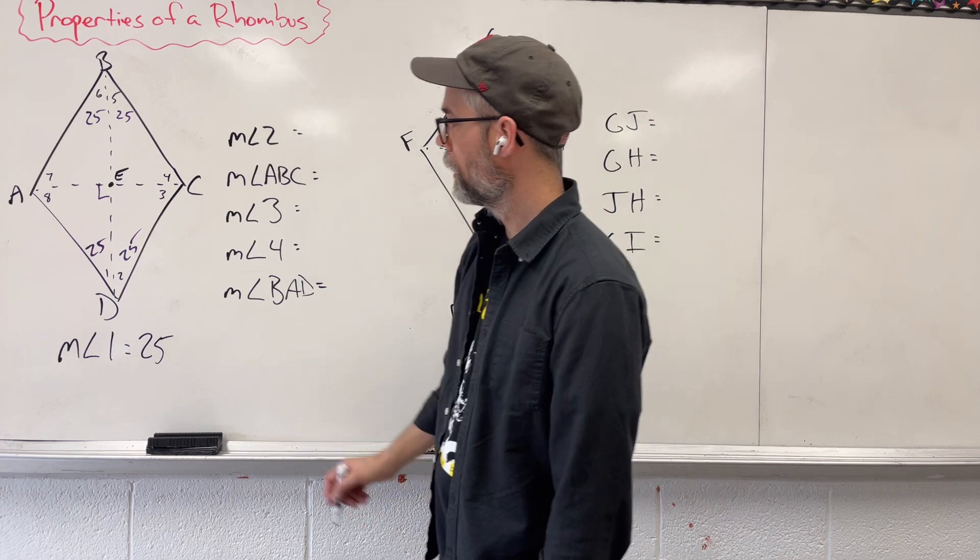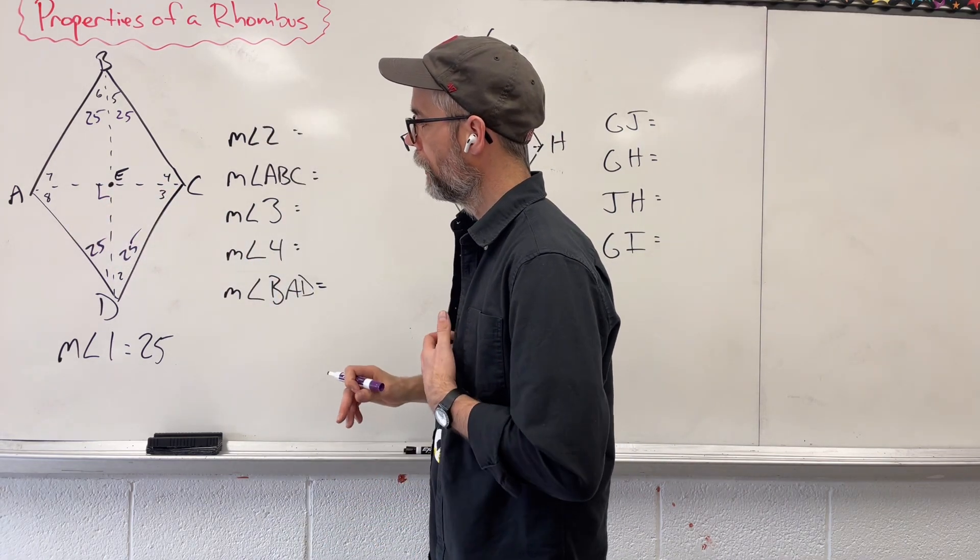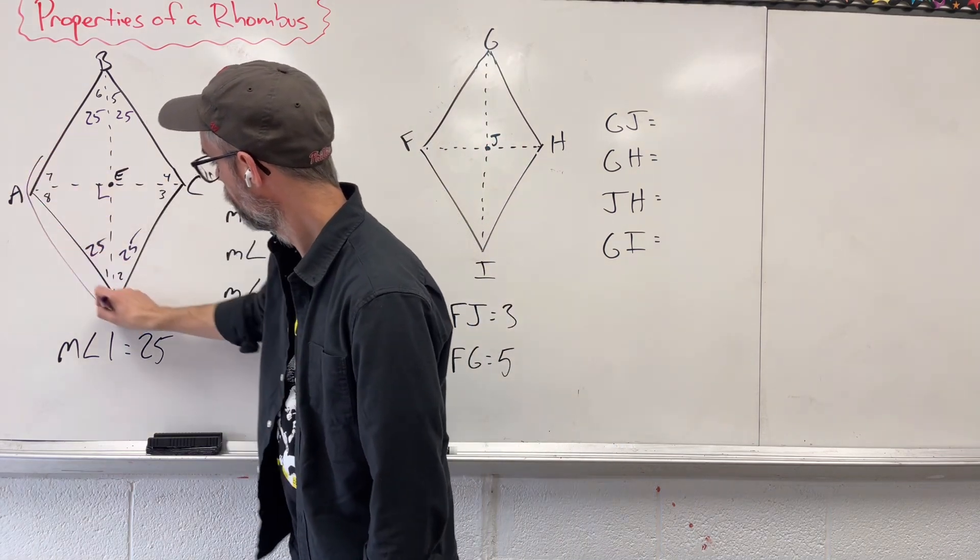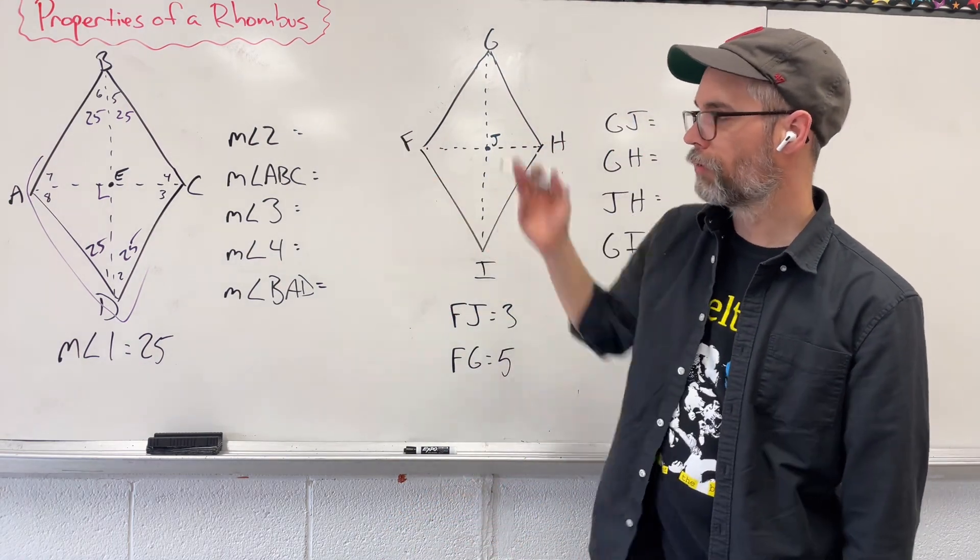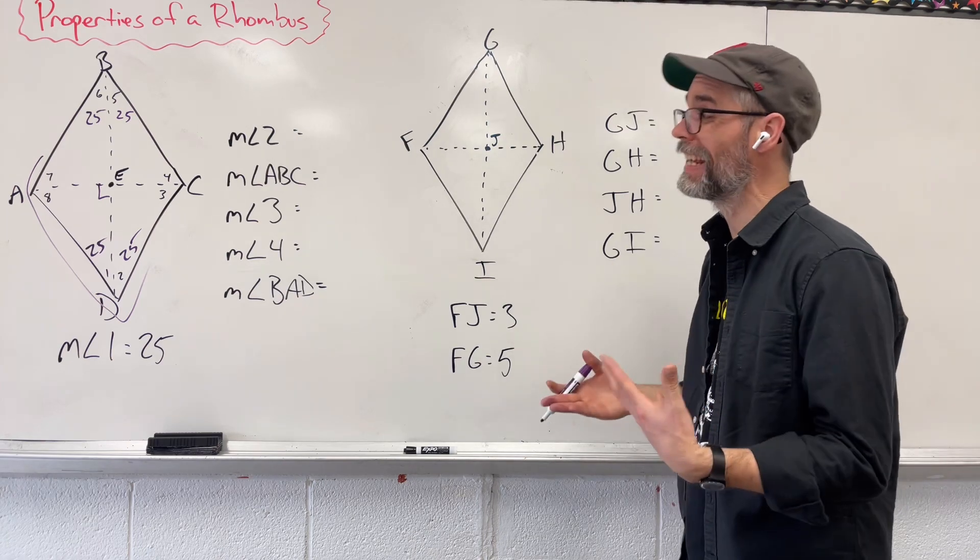And we need to figure out what 7, 8, 3, and 4 are. Now, we know that, let's look at that. Angle 7, 8, and 1, and 2 added together are supplementary. So they give us 180 degrees.